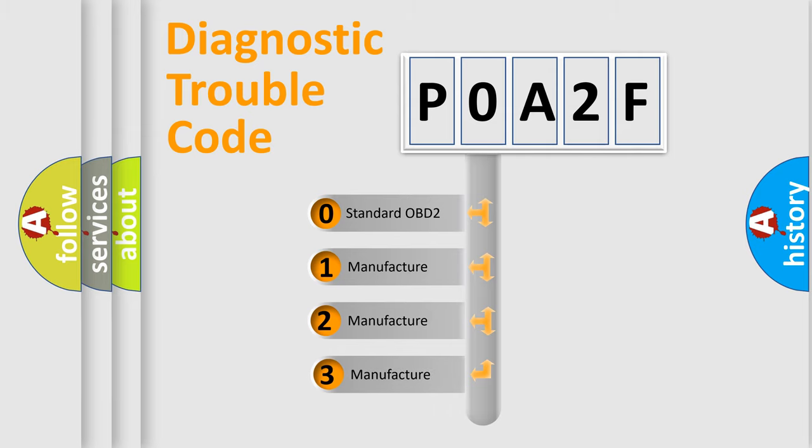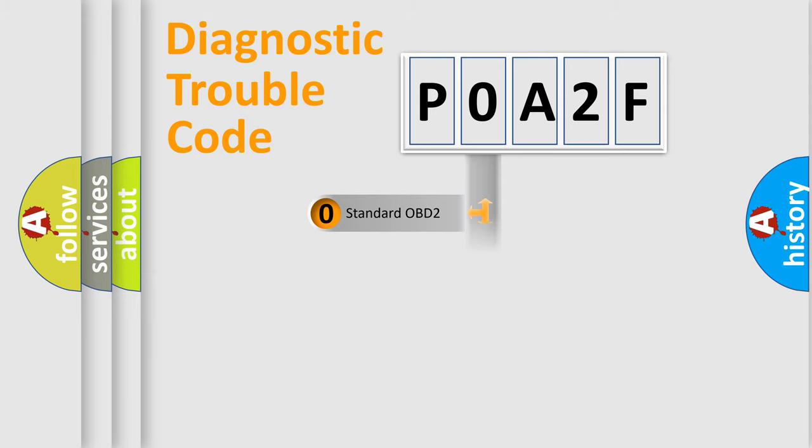If the second character is expressed as zero, it is a standardized error. In the case of numbers 1, 2, or 3, it is a more prestigious expression of the car-specific error.